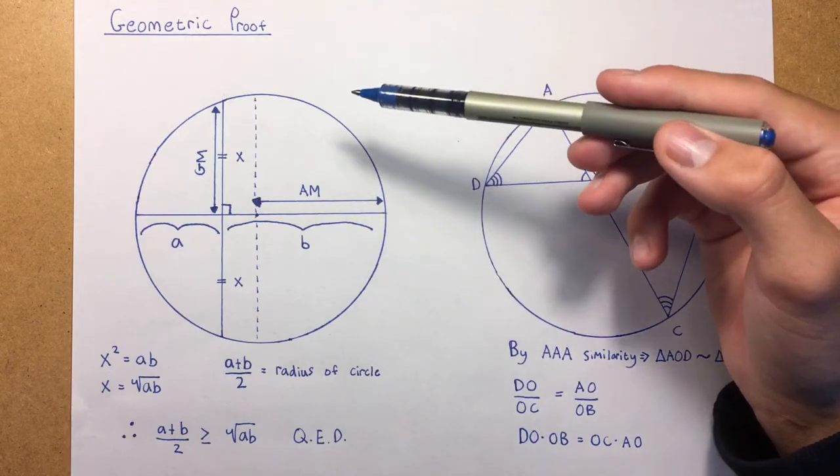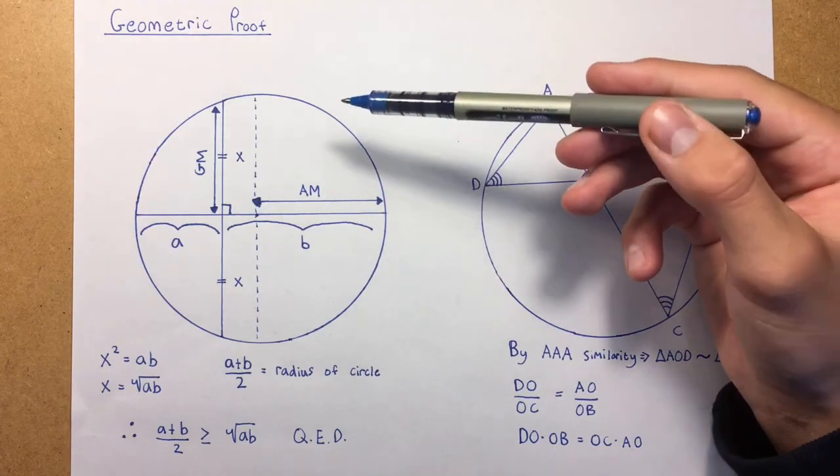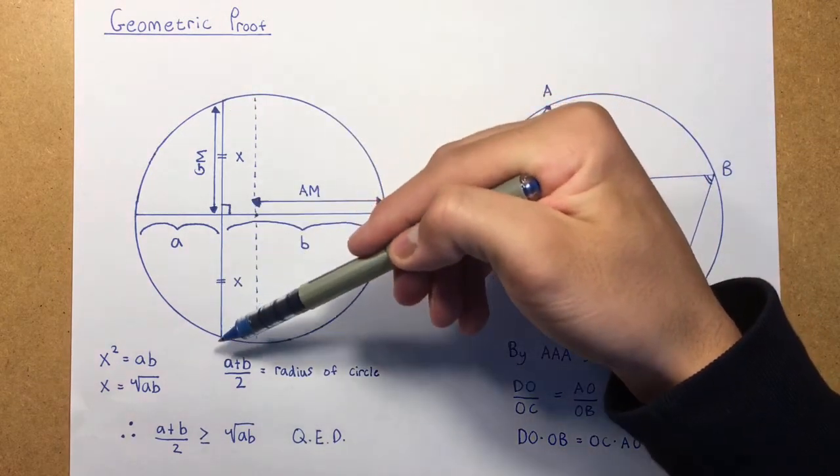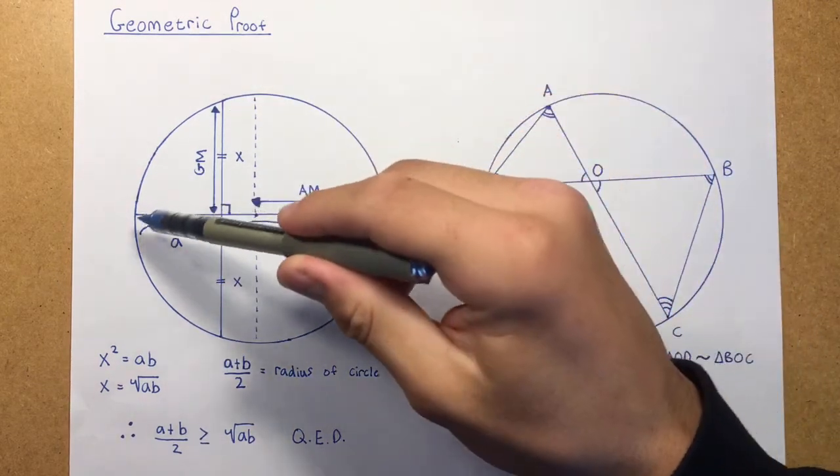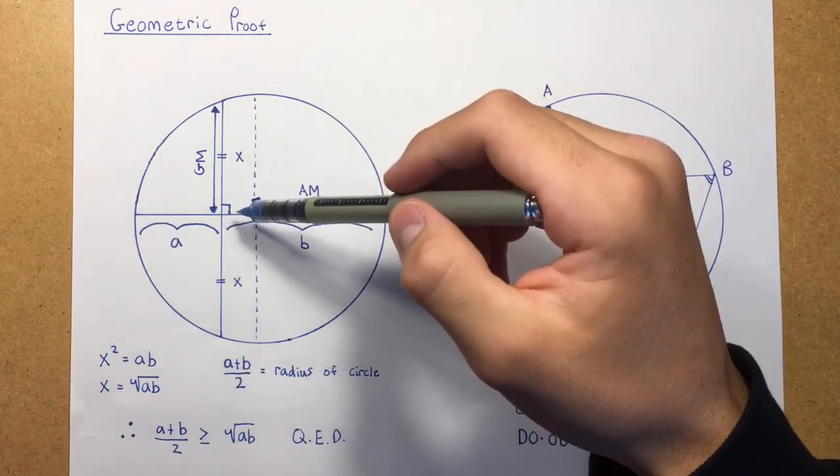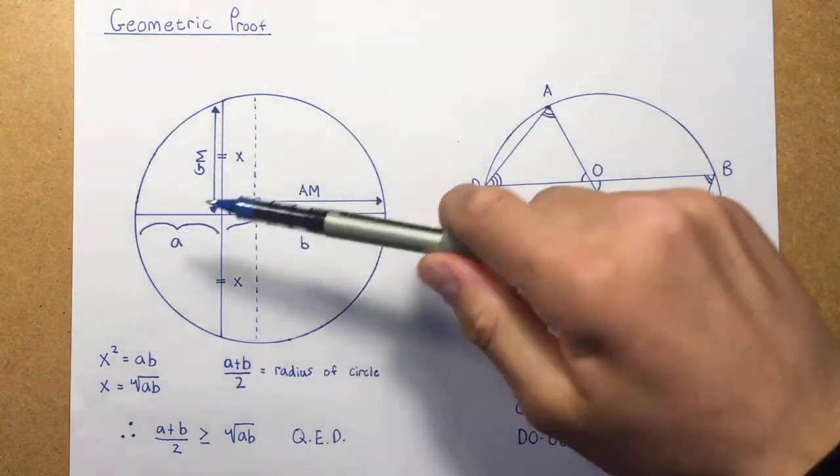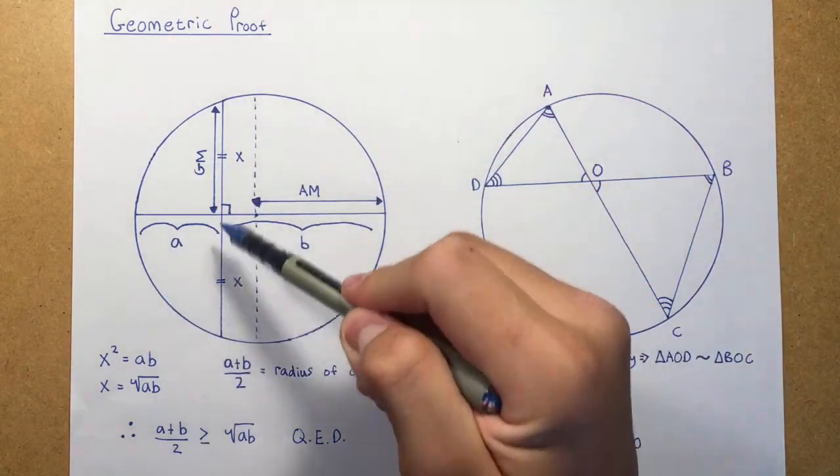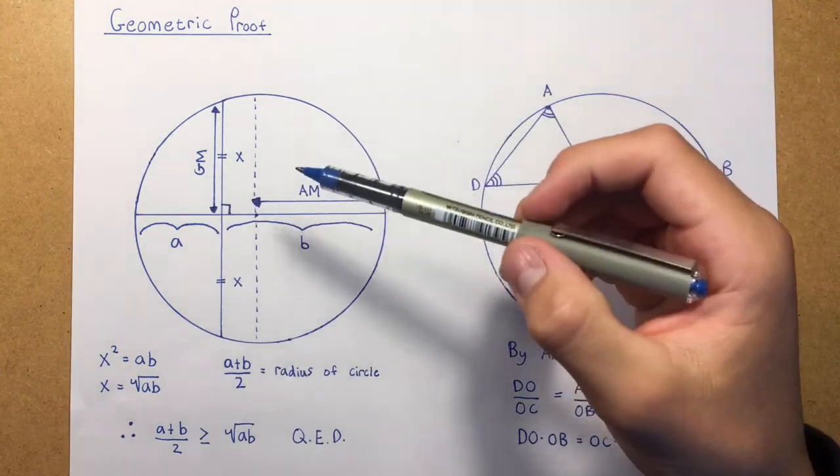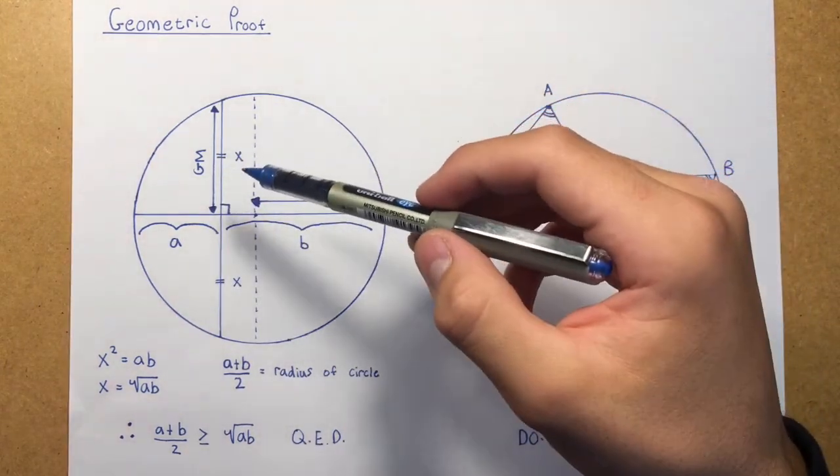The geometric mean, however, is a little bit different. So what we can start off by doing is dropping a chord from here, which intersects this diameter at right angles. And since this diameter bisects this chord, these two sides are equal, so we can label these as X.